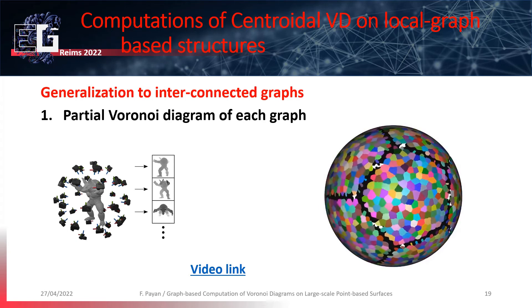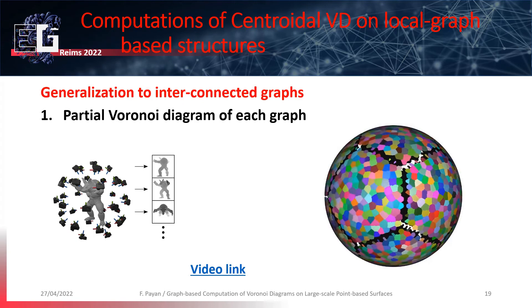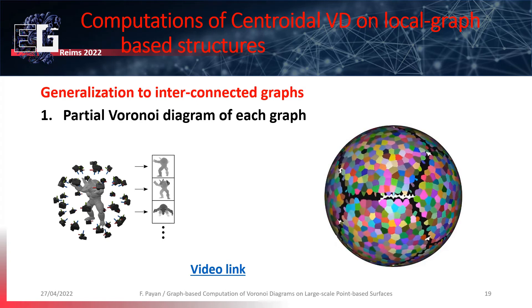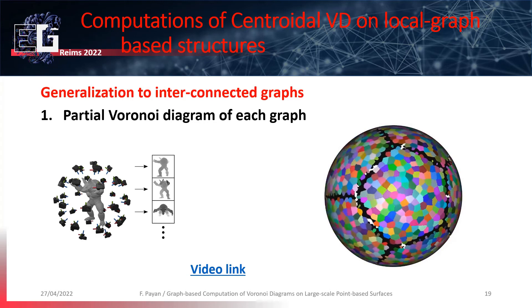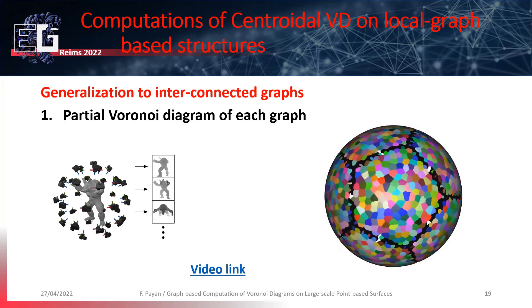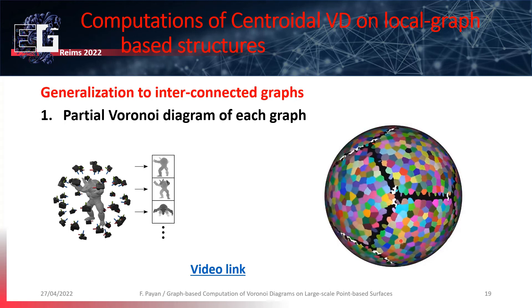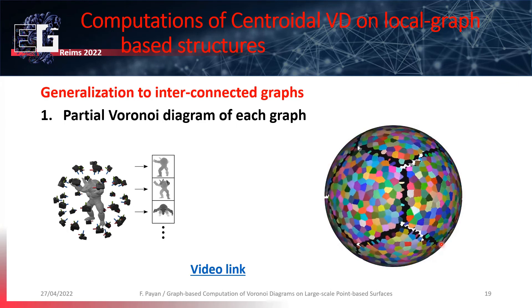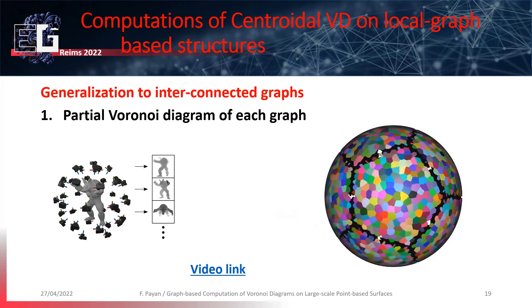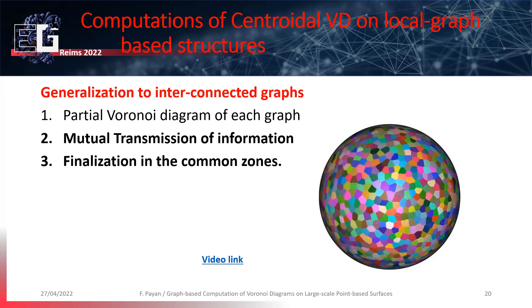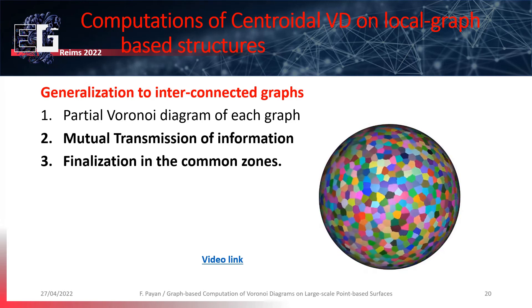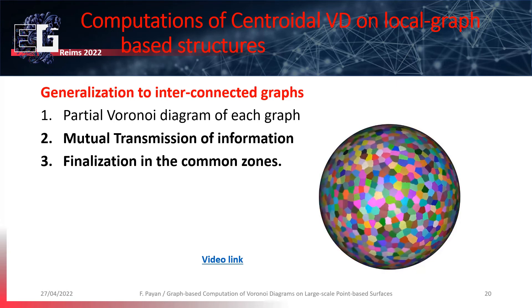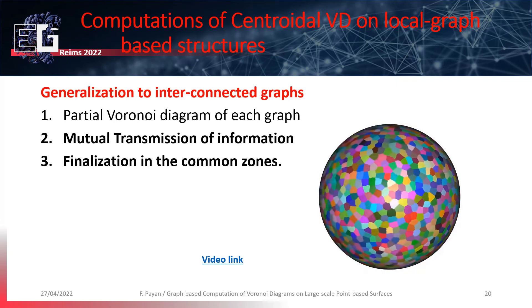Here is an illustration of our workflow on a sphere, from 12 depth maps generated synthetically from 12 virtual points of view all around the object. In this video, we can see the 12 partial Voronoi diagrams created with our method — the global cells, but also the uncertain parts that will be processed afterwards. Here we have the final diagram obtained after transmission of information about the partial cells and updating in the common zones. To get the centroidal tessellation, we restart this algorithm several times after computing the centroids.